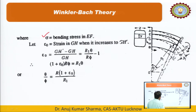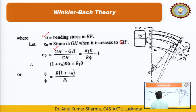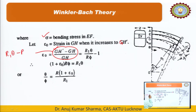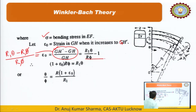The strain in GH as it increases to GH′ gives ε₀ (strain at the centroidal fiber). GH′ = R1θ and GH = Rφ, so ε₀ = (R1θ − Rφ)/Rφ. Upon simplification: (1 + ε₀)Rφ = R1θ, which gives the ratio θ/φ = R(1 + ε₀)/R1.